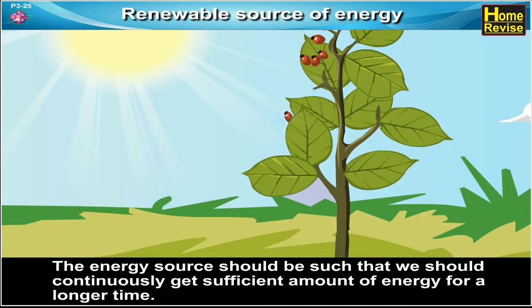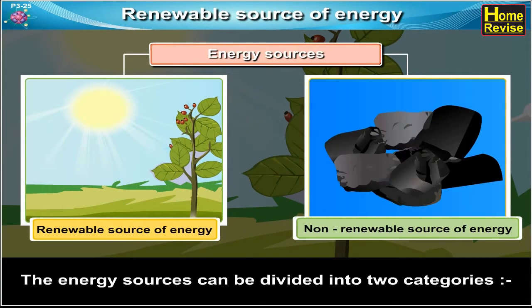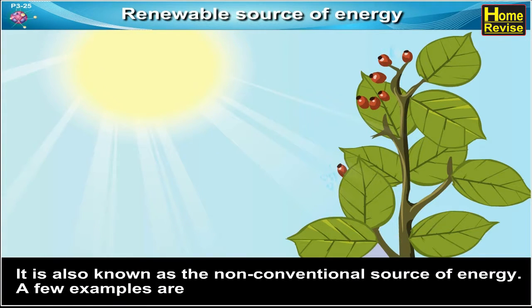Renewable Sources of Energy: The energy source should be such that we continuously get sufficient amount of energy for a longer time. Energy sources can be divided into two categories. The first is Renewable Sources of Energy. When a natural source goes on providing us energy continuously without getting exhausted, it is called a Renewable Source of Energy. It is also known as a Non-Conventional Source of Energy.